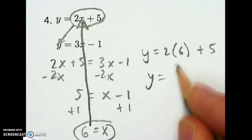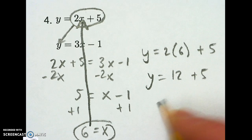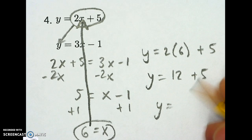So 2 times 6 is 12 plus 5. So I get y equals 17.